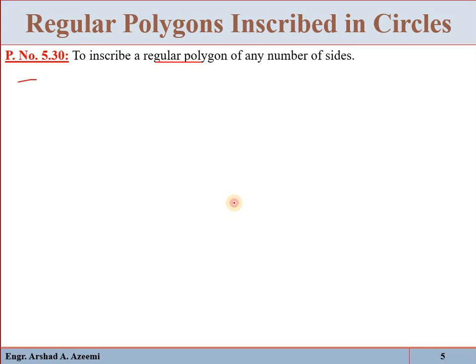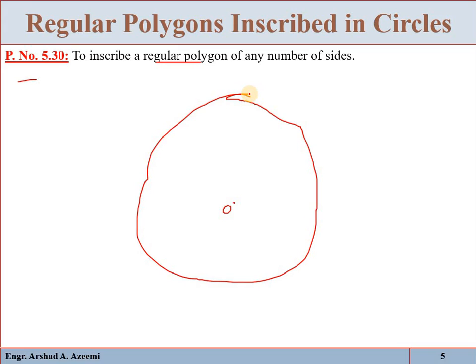First, with center point O, draw the given circle. Now, our requirement is to inscribe a regular polygon — for example, with 5 sides. Just draw a horizontal diameter of the given circle and divide the diameter into 5 equal parts: 1, 2, 3, 4, and 5. The number of parts into which you divide the diameter equals the number of sides of the polygon. If you are inscribing a hexagon, divide the diameter into 6 parts.